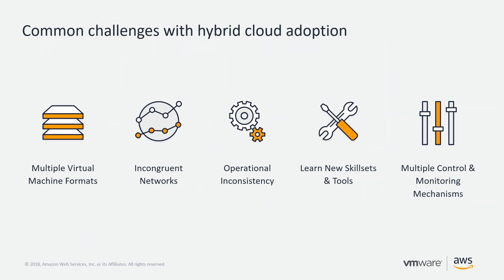Some of the common challenges with hybrid cloud adoption come down to having to work with multiple virtual machine formats, incongruent networks between on-premises and the cloud, operational inconsistency between how you manage VMs on-premises versus in the cloud, having to learn new skill sets and tools, and having multiple control and monitoring mechanisms in place.